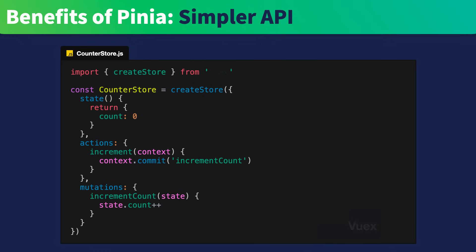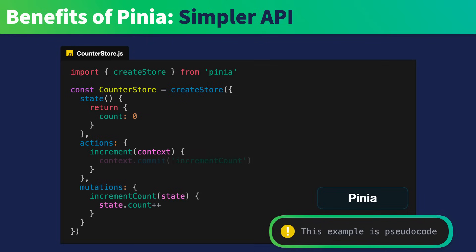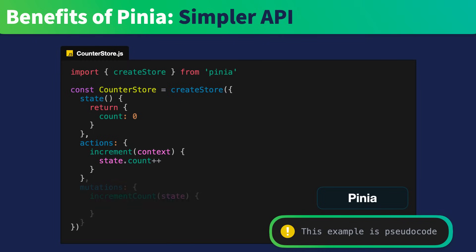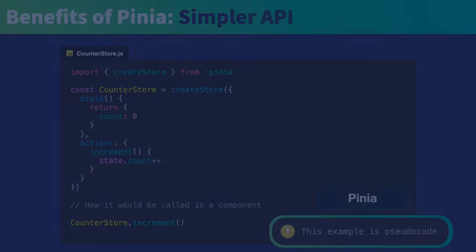So what might this look like inside of Pinia? We're going to do some pseudo code here just to show how this API could be simplified. One of the things that occurred to the team is: what if we didn't have mutations at all? So instead of having to commit your mutation, what if you could just do that directly inside of your action? As a result, you can get rid of mutations entirely, and you don't even need to track the context. What if it could be this simple? And if you want to call the action inside of your component, what if it could be called just like a normal JavaScript function? Pinia explores a lot of these ideas and more.